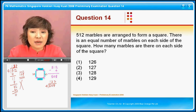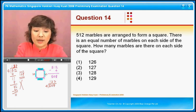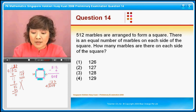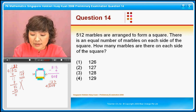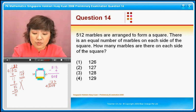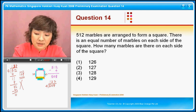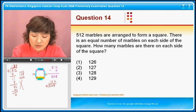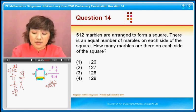Now the question is how many marbles are there on each side of the square? Where is each side of the square? Each side of the square is from here all the way here. So remember there's one marble here and one marble here.